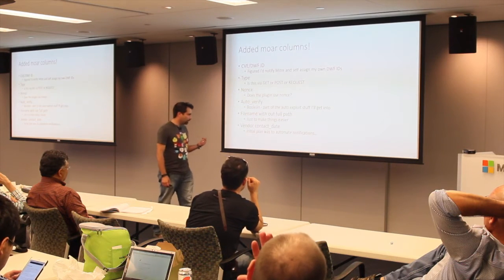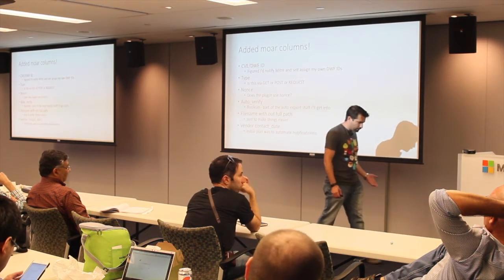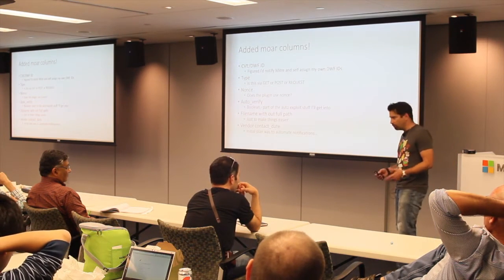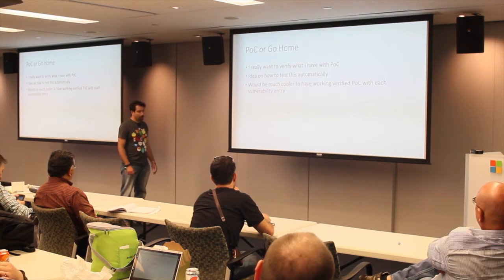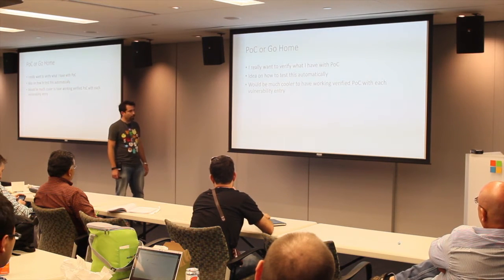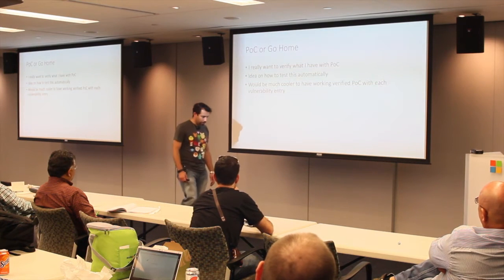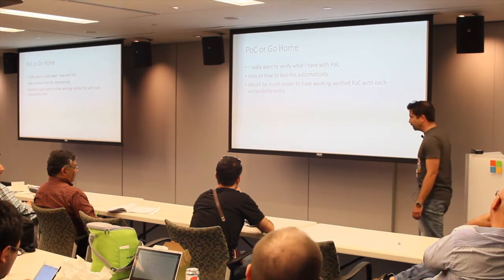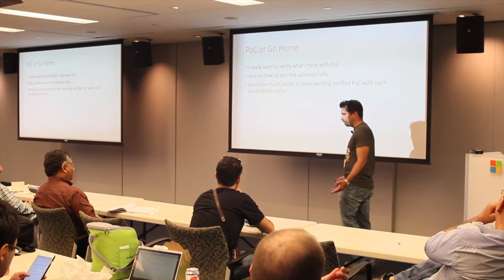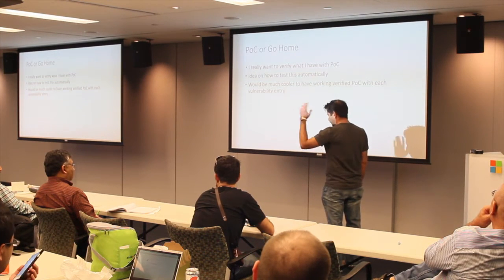I wanted to validate the proof of concepts — proof of concepts or go home. I wanted to know that all 1,352 vulnerabilities were valid, that the actual JavaScript executed. I had an idea on a flight back from an RV trip in California about how to test it. I thought it would be really cool to release a database of over 1,000 vulnerabilities with over 1,000 verified proof-of-concept exploits. How cool would that be?